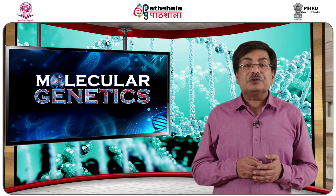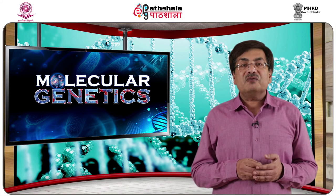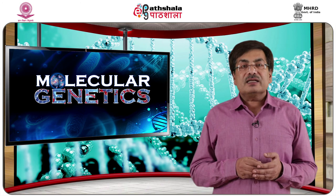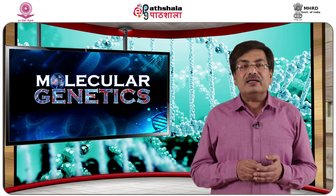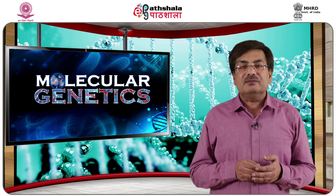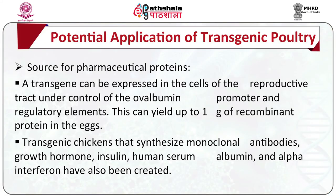Transgenics could also be used to improve the genetic makeup of chickens with respect to disease resistance, lower fat and cholesterol level in eggs, and better meat quality. Eggs with their high protein content could be used for production of pharmaceutical proteins. A transgene expressed in cells of the reproductive tract under control of the ovalbumin promoter and regulatory elements can yield up to 1 gram of recombinant protein per egg. Transgenic chickens that synthesize monoclonal antibodies, growth hormone, insulin, human serum albumin and alpha interferon have also been produced.